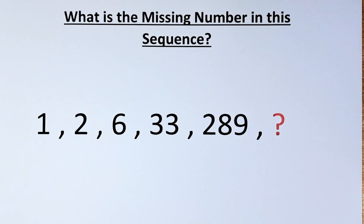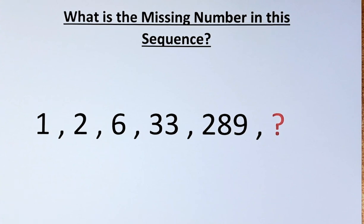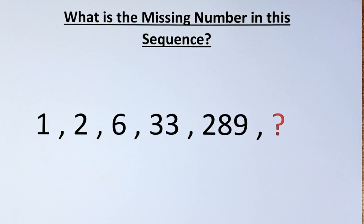Welcome back. This is the solution to what is the missing number in this number sequence. The numbers in the sequence are 1, 2, 6, 33, 289, and a question mark. As usual, we need to find the next number in the sequence represented by the question mark. Without further ado, let's try to solve this problem.